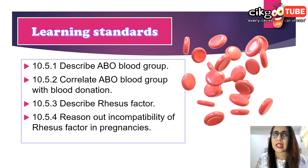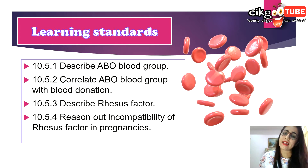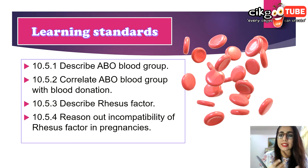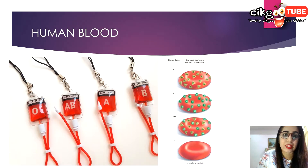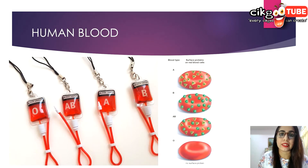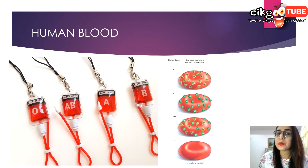The ABO blood group is something you have learned in Form Three science, and now you are going to see the same thing but with an extra addition — the rhesus factor.